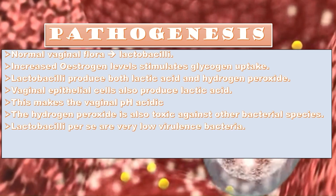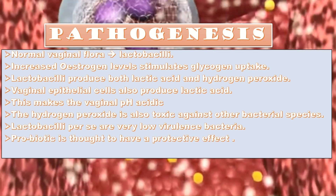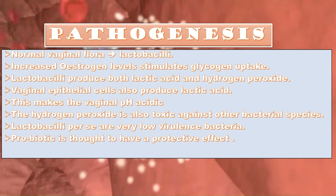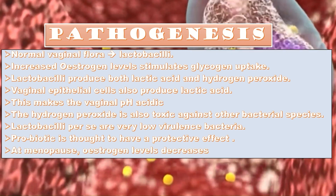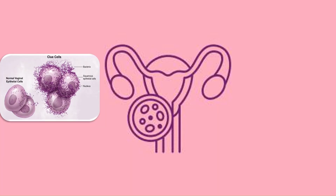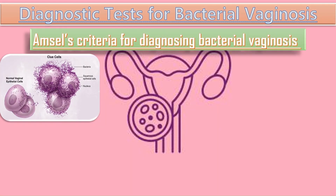Hydrogen peroxide is also toxic against other bacterial species. Lactobacilli are very low virulence bacteria and are thought to have a protective probiotic effect. At menopause, estrogen levels decrease. The diagnostic tests for bacterial vaginosis include the Amsel criteria for diagnosing bacterial vaginosis, which was introduced in 1984.